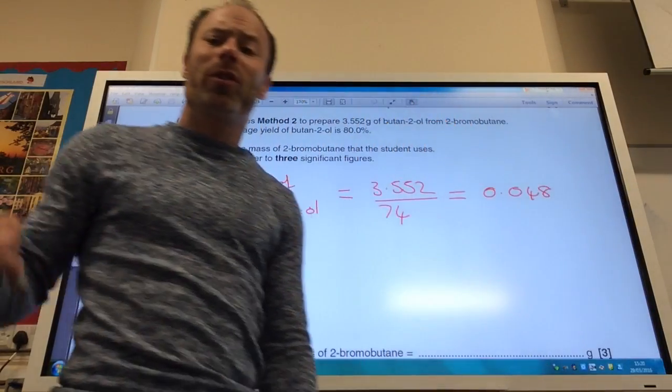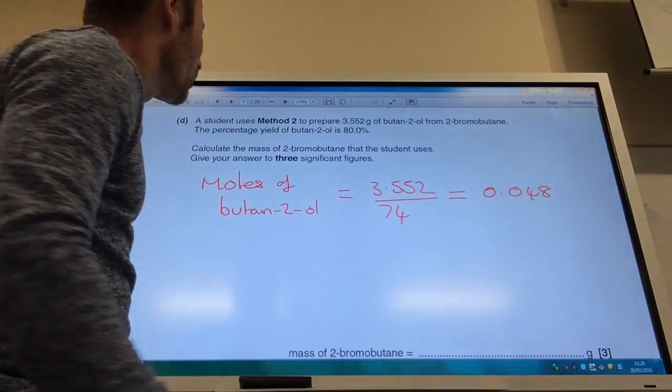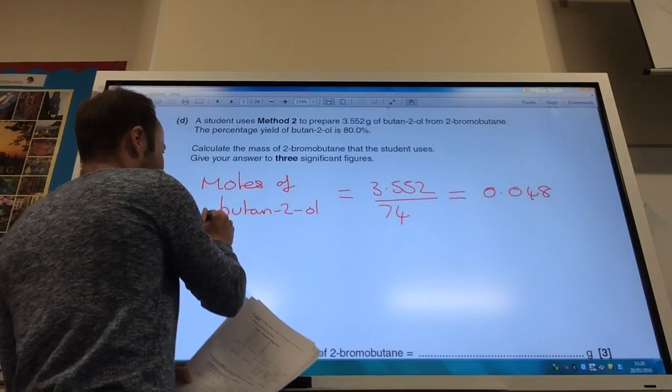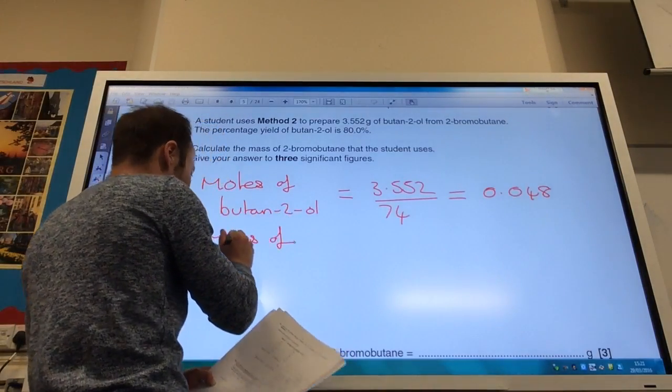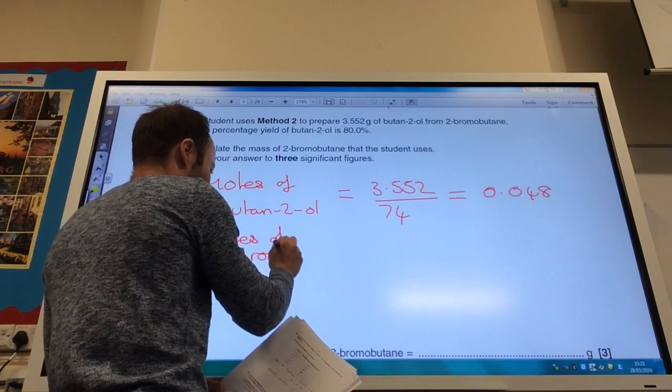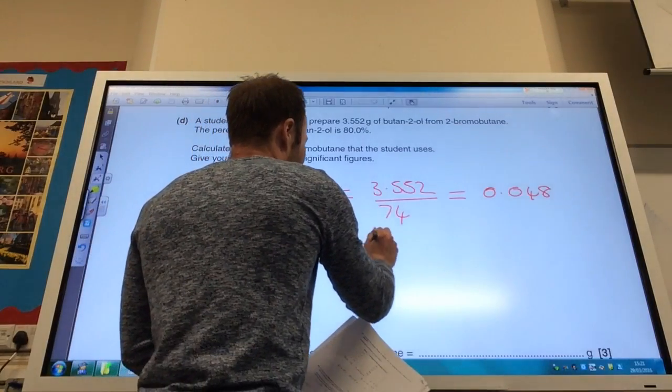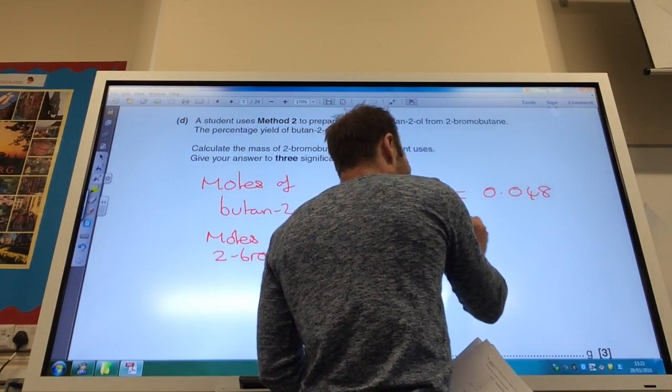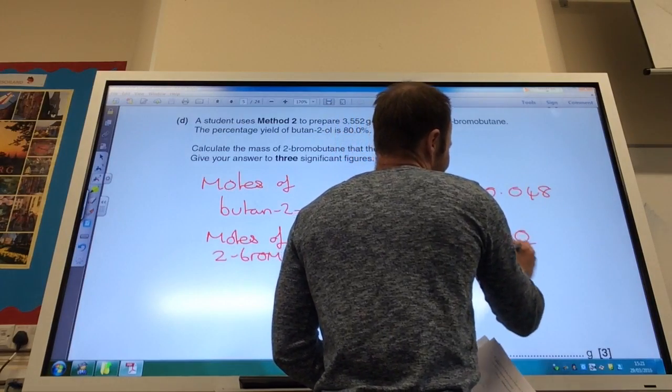So that's the number of moles that I made but it was only 80% yield. So to work out the number of moles that I need to start with. So moles of 2-bromobutane is going to equal 0.048. But I need to scale it up for the fact that I only got an 80% yield. So it's times 100 divided by 80 which gives me 0.06 moles.